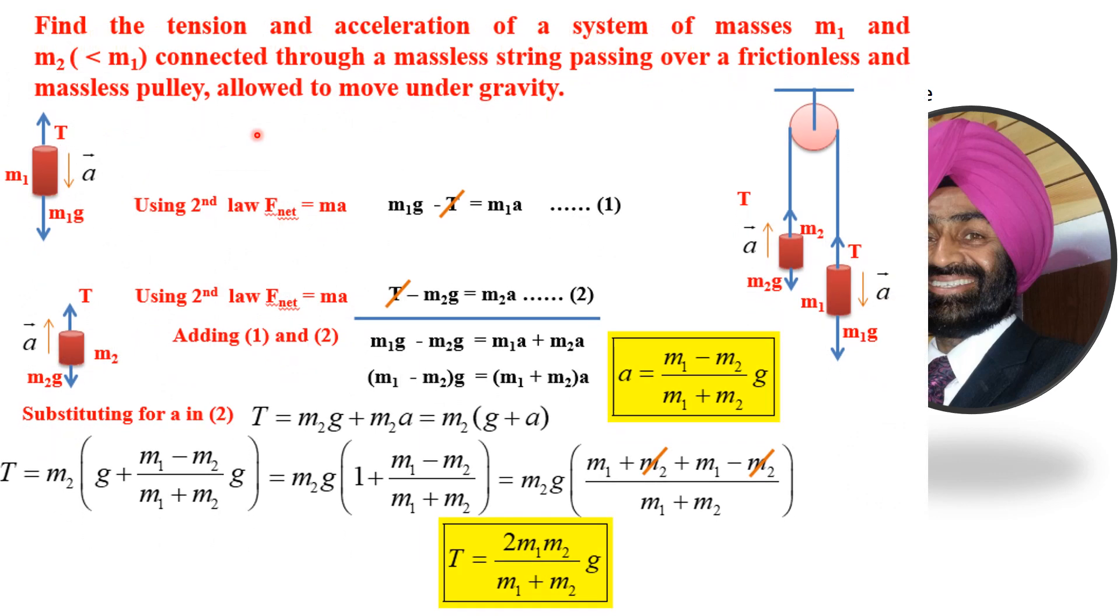You will have to recall the acceleration and tension calculated for a two body system in the derivation of laws of motion in which two masses m1 greater than m2 were connected through a string passing over a pulley. On this mass, force m1g was downwards, tension T was upwards, net force equals m1 times a. On this mass the force was m2g downward but it accelerates upwards so T minus m2g equals m2a. On adding these two you get acceleration.